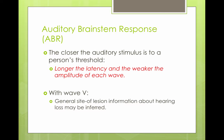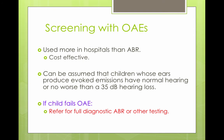The closer the auditory stimulus is to the person's threshold, the longer the latency of the wave and the weaker the amplitude of the wave. With wave 5, we can find general site-of-lesion information about hearing loss. You're looking for the lowest level at which you can find wave 5, and that corresponds with the child's hearing.